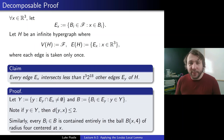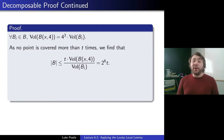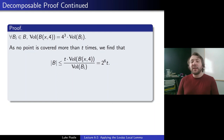Every Bi in B is a unit ball, and the ball of radius 4 has volume 4³ times the unit volume. Thinking about the fact that no point is covered more than t times, the number of balls is at most t times the volume of the radius-4 ball divided by the volume of the unit ball, which works out to be 4³·t = 2^6·t. So we've shown there are at most 2^6·t balls involved in the intersecting edges.